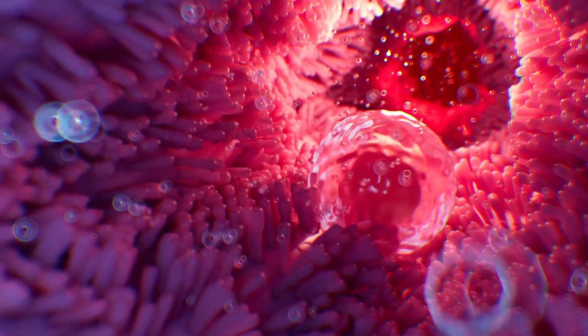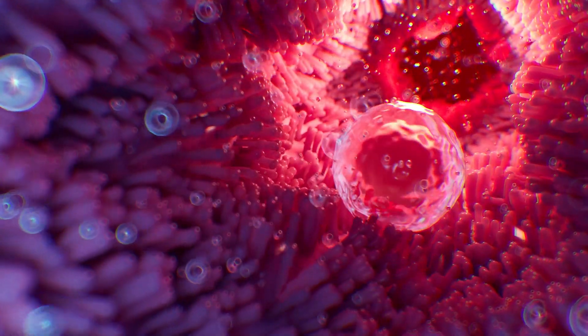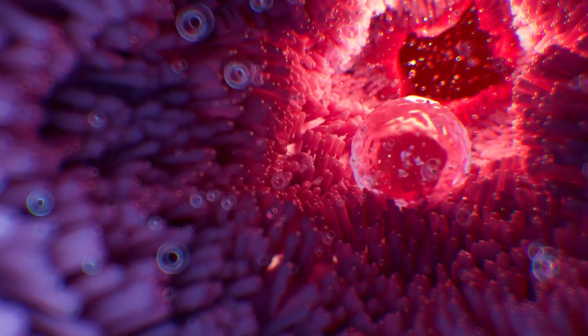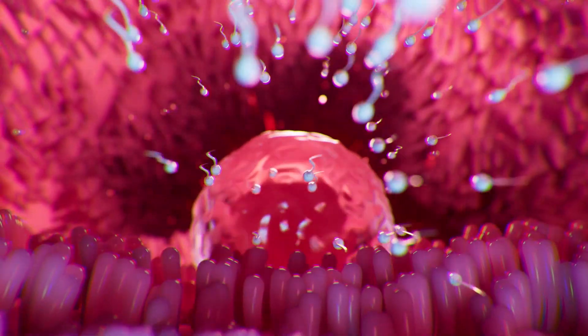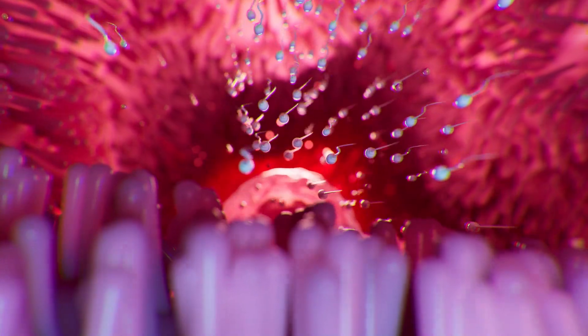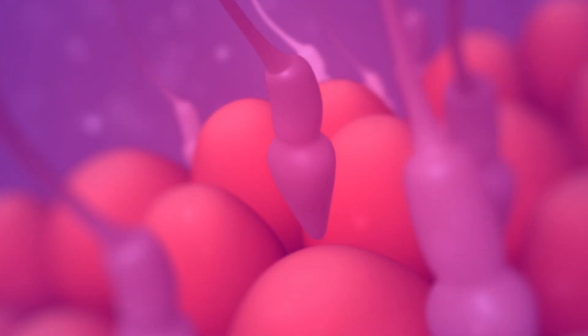Meanwhile, tiny cilia propel the egg towards the uterus, enabling it to continue its trajectory. The sperm must navigate this movement to reach the egg. Unfortunately, some sperm may become entrapped in the cilia and perish during this stage of the journey.